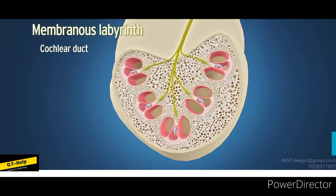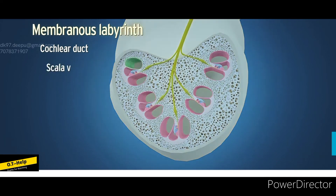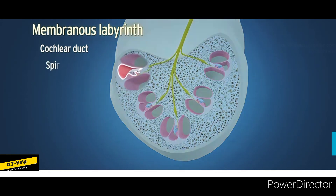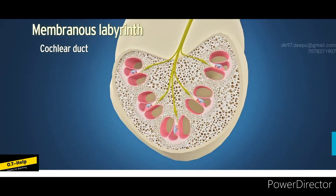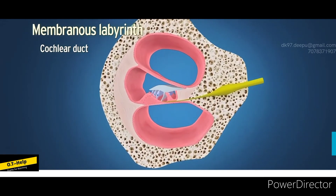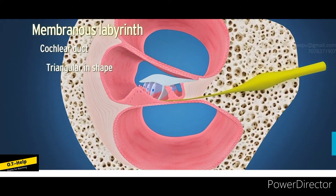The cochlear duct is the spiral part of the membranous labyrinth, which has two and three-fourth turns. It lies between the scala vestibuli and scala tympani and contains the sensory receptor for hearing, the spiral organ of Corti. If we take a section of the cochlear duct, it appears triangular in shape.